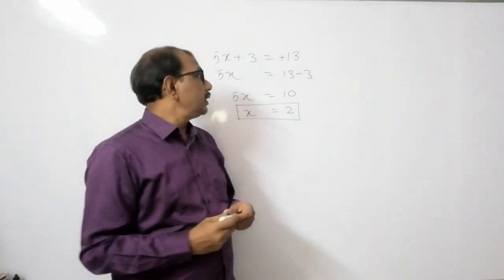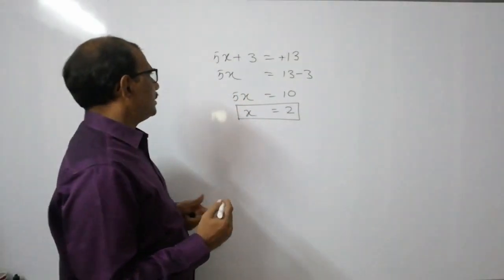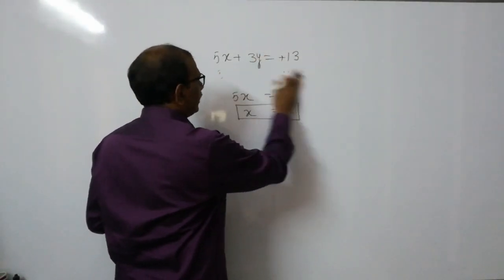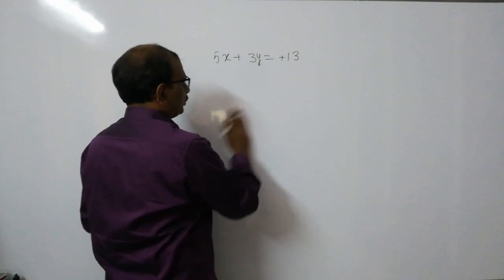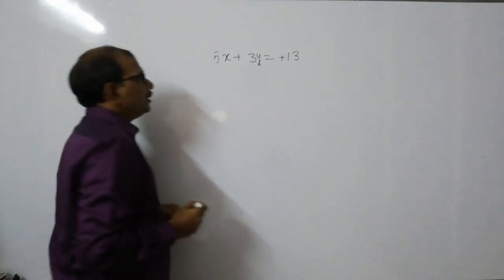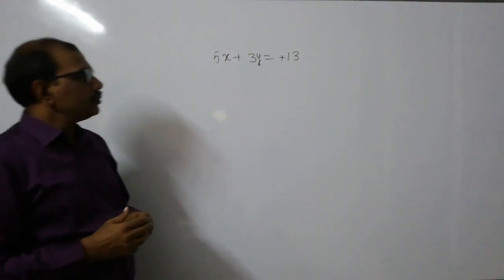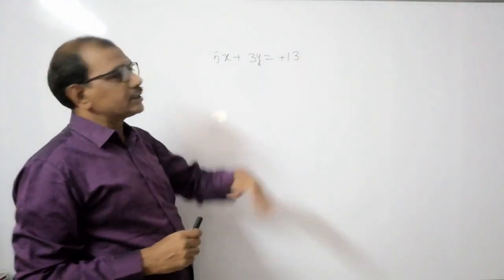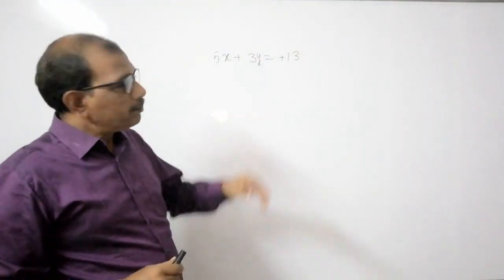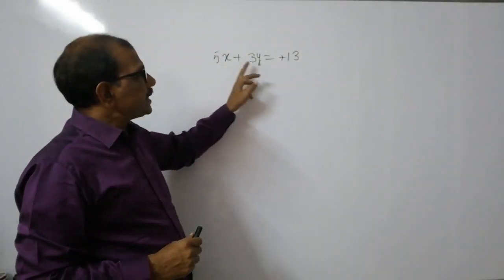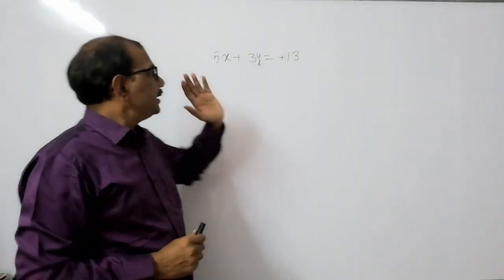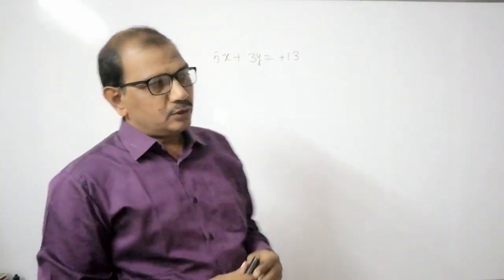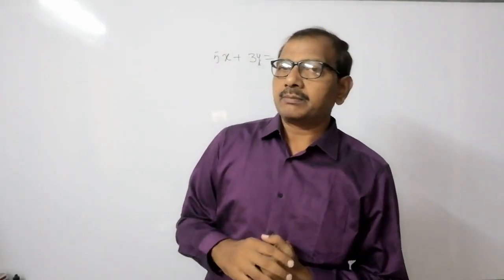But suppose instead you have something like 5x plus 3y equals 13. This is also a linear equation because the degree is 1, but it has two variables x and y. So 5x plus 3y equals 13 involves two unknowns.